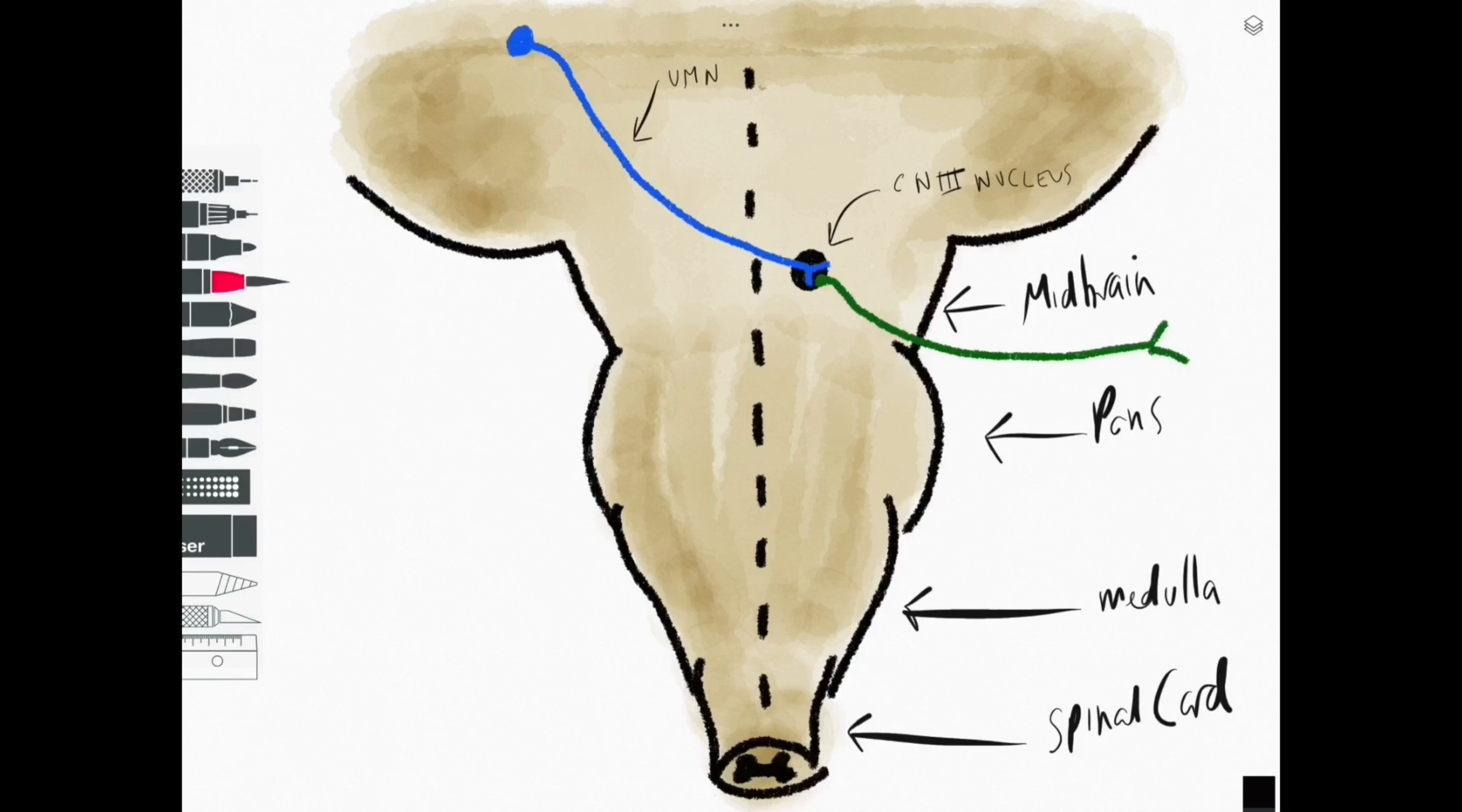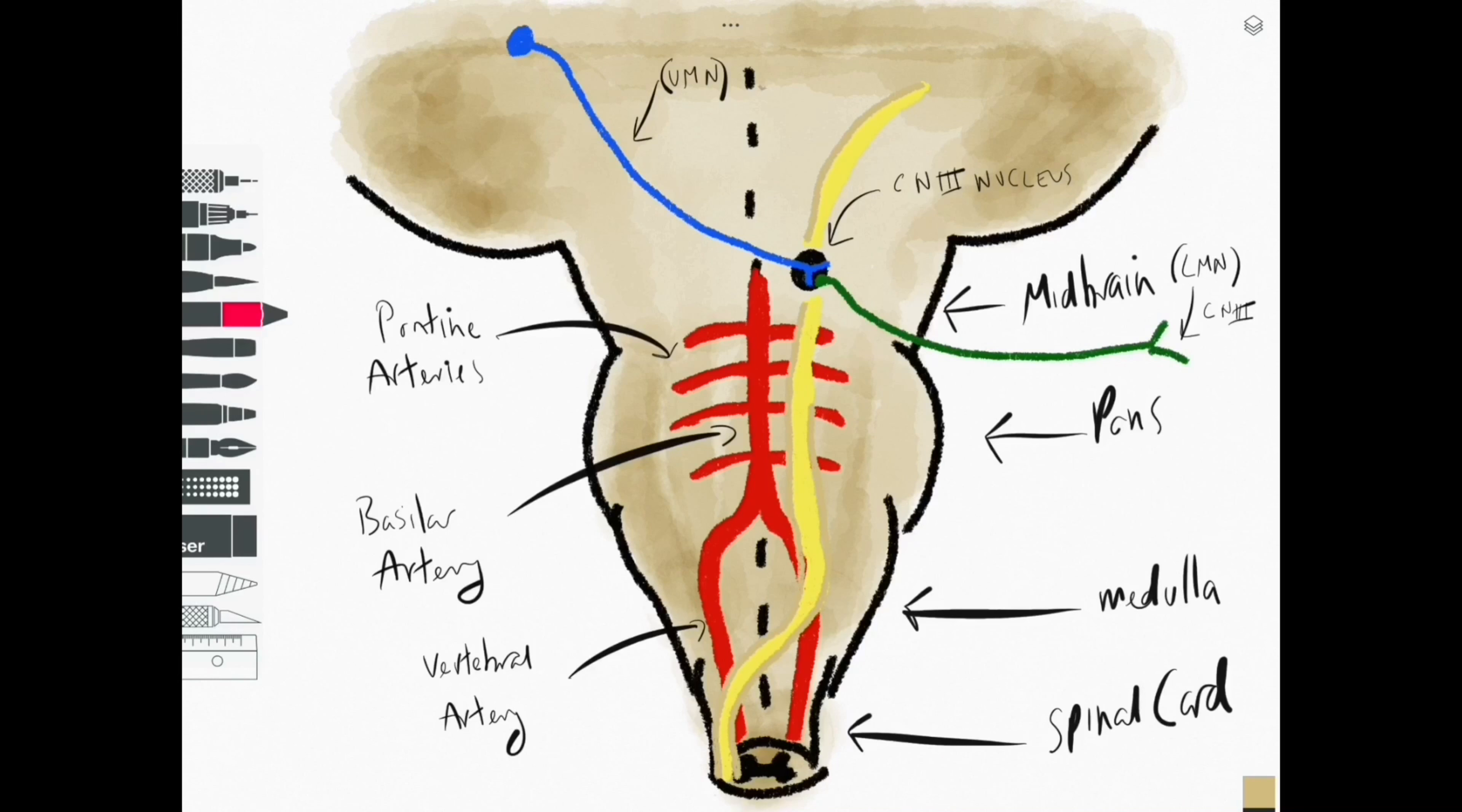So what we'll see here is that if we were to have a lesion from a stroke, maybe unilaterally, that affected the cranial nerves that have motor functions—and in this case we're using the example of cranial nerve number three, the oculomotor nerve—we are going to have ipsilateral problems with the cranial nerve in question.